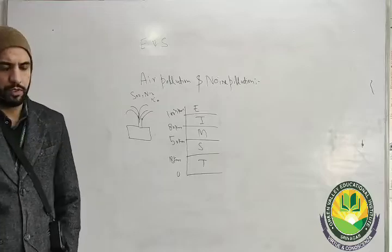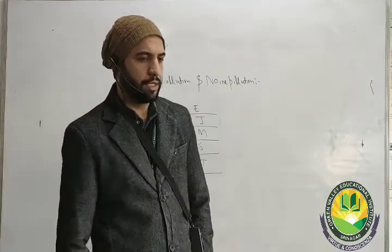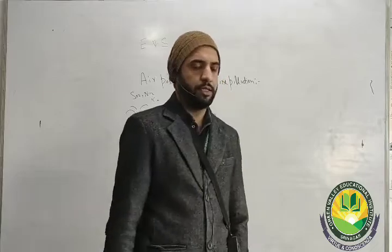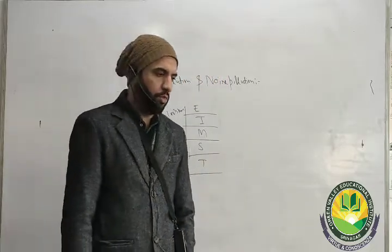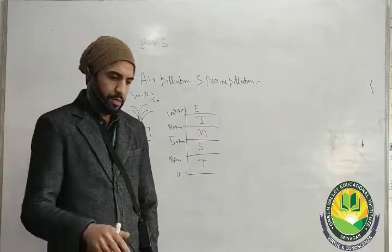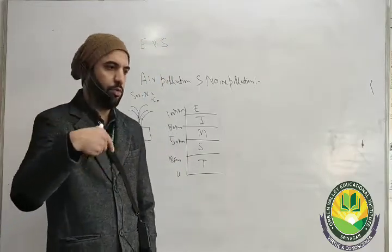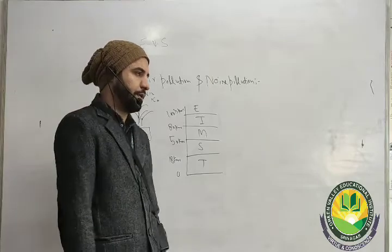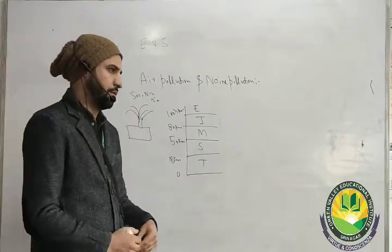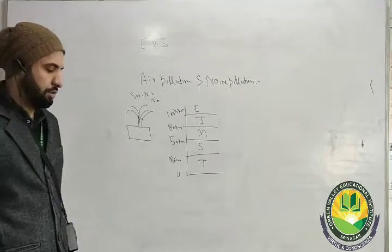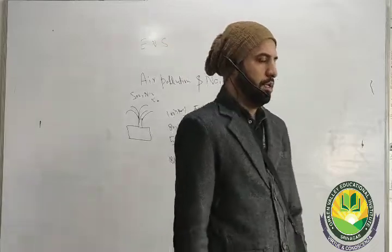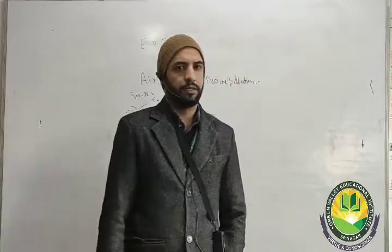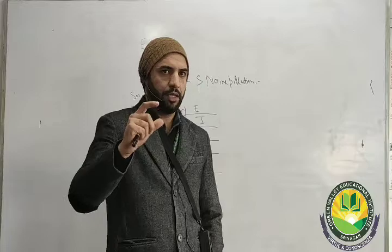These were some of the causes of atmospheric pollution. Now, talking about effects — we have global warming. Global warming is a change in temperature, where temperature changes from its original value by 1–2 degrees Celsius. Global warming is caused by greenhouse gases such as sulfur dioxide, nitrogen dioxide, carbon dioxide, and methane, which are released by industries, automobiles, and fossil fuels. This causes sunlight to be trapped in the atmosphere.